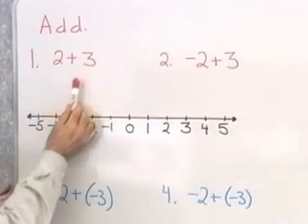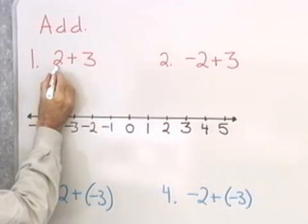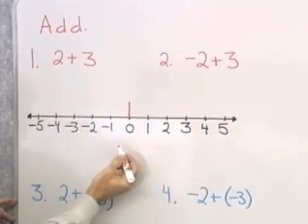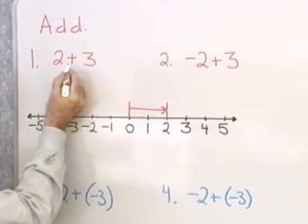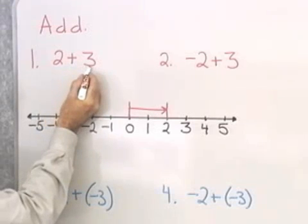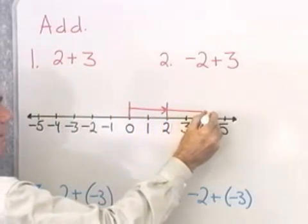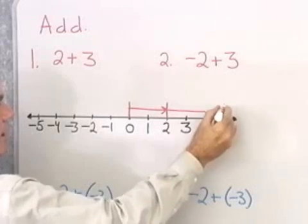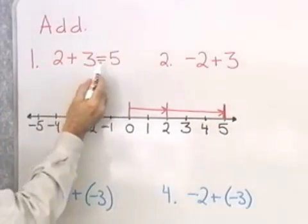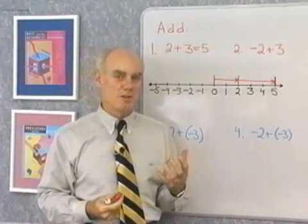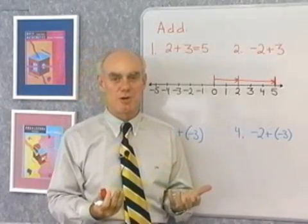I want to add 2 plus 3 on this number line. I always start at the origin, and then I move 2 units in the positive direction because that is positive 2. I start at the origin and move 1, 2 units in the positive direction. The plus sign means move another 3 units in the positive direction. The place where I end up is the answer to this problem. And so, on the number line, 2 plus 3 is equal to 5. I just want to show you that by using this number line, we get answers consistent with what we already know are correct.